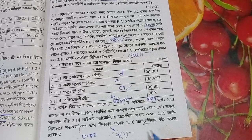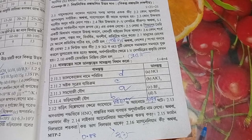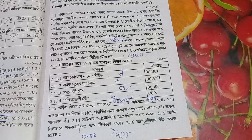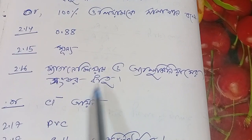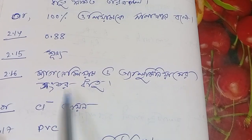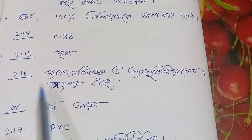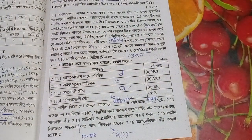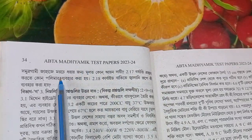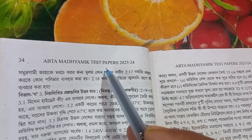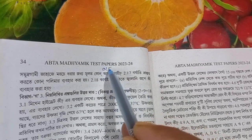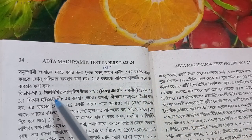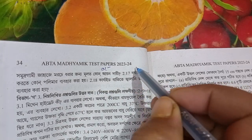Magnetium is made in magnesium plus aluminum. Magnetium is made in magnesium and aluminum. Where is chloride? Where is PBC?